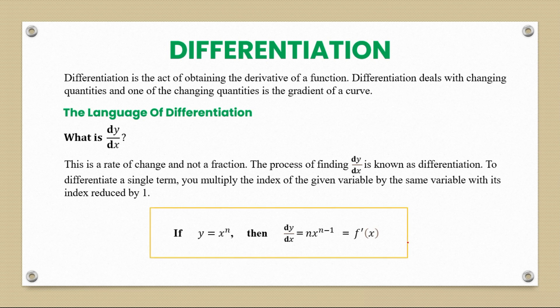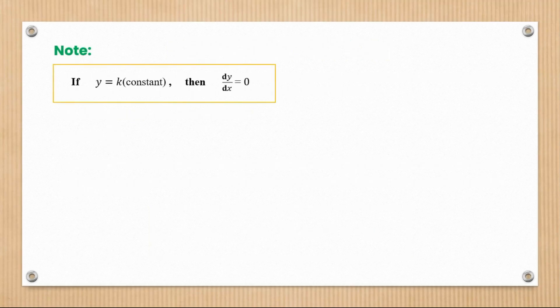Something to note: if y equals k, where k is a constant — for example, y equals two, three, or any random number including fractions — then dy/dx shall be equal to zero.